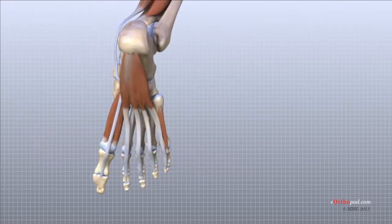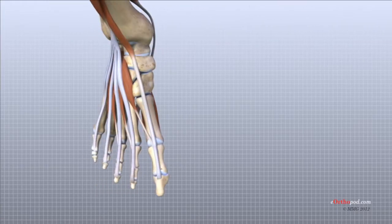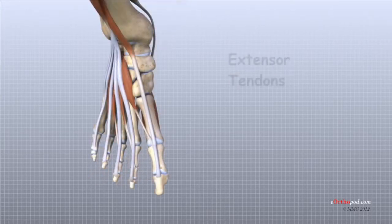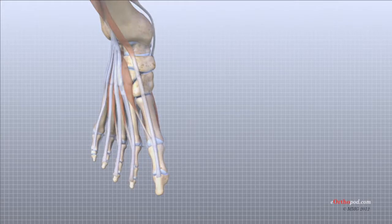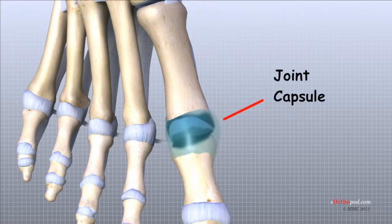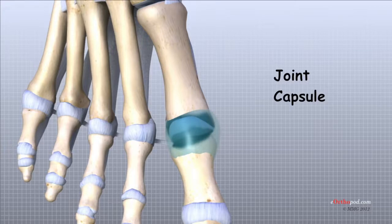There are a set of tendons that bend the toes down, or flex the toes, and a set of tendons that straighten or extend the toes. The tendons that flex the toes are called the flexor tendons, and there are two flexor tendons on the undersurface of each toe. The tendons that extend the toes are called the extensor tendons, with two extensor tendons on the top surface of each toe. Many small ligaments hold the bones of the foot together, and most form part of the joint capsule around each joint. A joint capsule is a watertight sac made up of the ligaments and soft tissues that fill in the gaps around each joint.